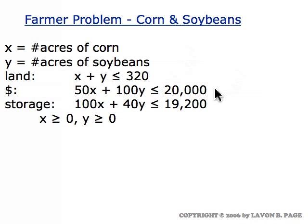The farmer had only $20,000 in cash on hand, so there was a capital constraint, and there was a storage space constraint involving the number of bushels of storage required by the two crops and the limit on storage available, along with our non-negativity constraints. This is the complete setup of the problem that we had, which we have previously solved by the graphical method.